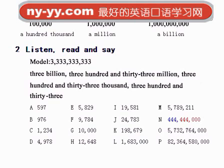N: Four hundred and forty-four million four hundred and forty-four thousand. O: Five billion seven hundred and thirty-two million seven hundred and sixty-four thousand. P: Eighty-two billion three hundred and sixty-four million five hundred and eighty thousand.